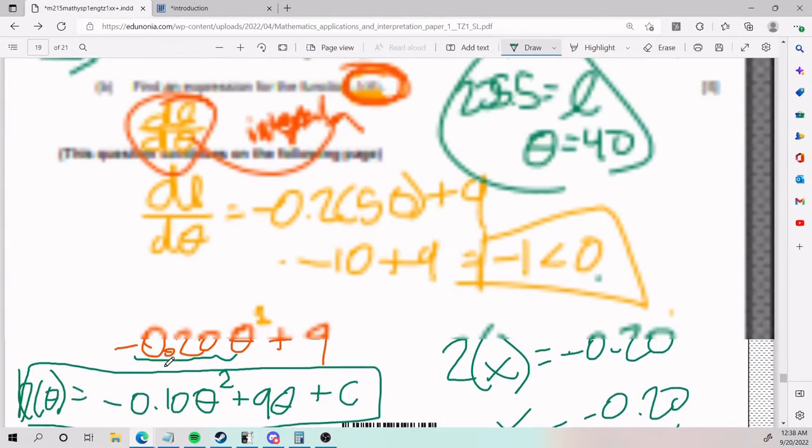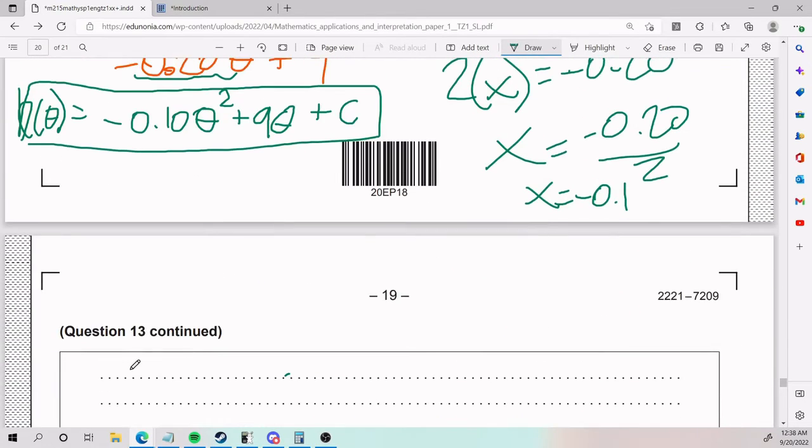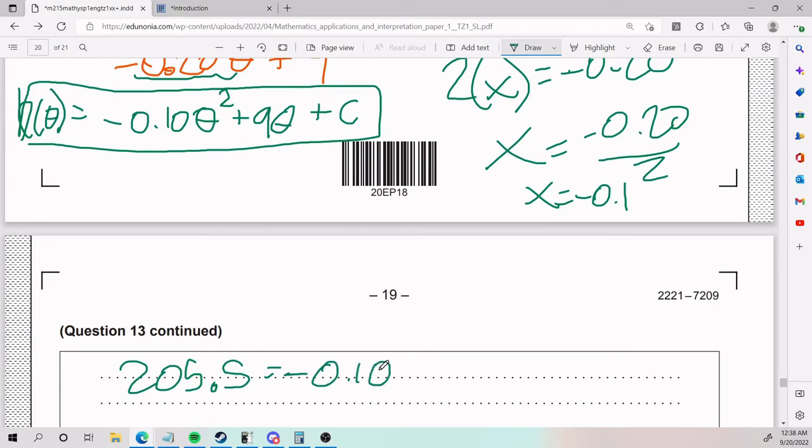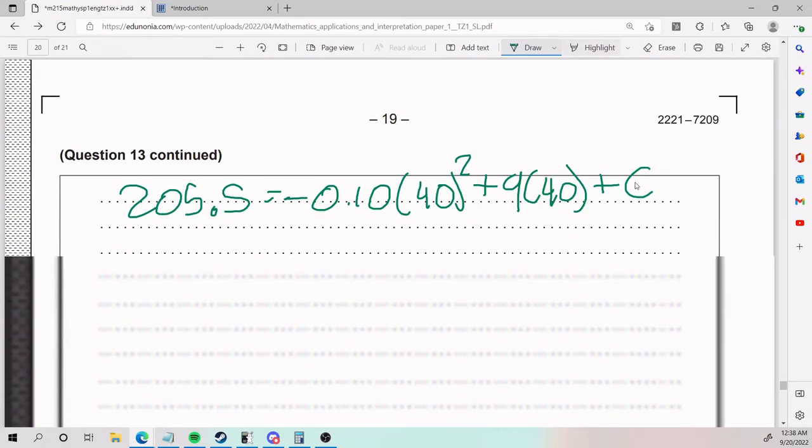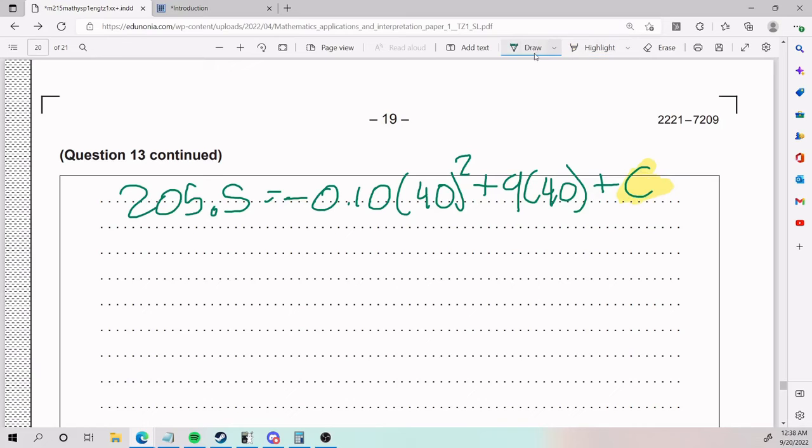And so we're going to have that the distance, which we said was 205.5, equals negative 0.10θ, which we said was 40 squared plus 9 times 40 plus C. We're doing this to get the value of C. Once we get the value of C, we're done.